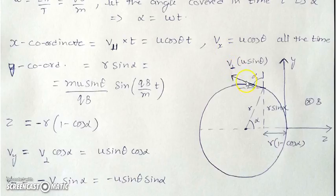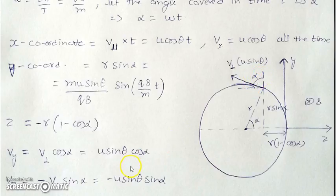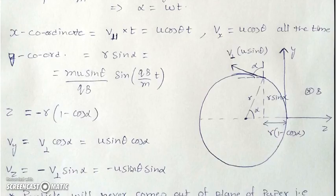So we get x, y, and z coordinates. For the velocity components: the x-component is already calculated as constant. The y-component is v_perp cosα, because α is the angle made with the y-axis using basic geometry. The z-component is −v_perp sinα, since this angle is also α as the angle between the horizontal and the radius vector is α.